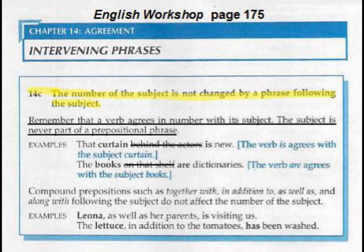That's how I figure it out every time — I pretty much just eliminate the intervening phrase by crossing it out either on the page or in my mind, and then I'll know how to say it or write it correctly. Look at the next one: 'The books on that shelf.' Cross out 'on that shelf,' and you have 'the books are dictionaries,' which makes it much more simplistic.